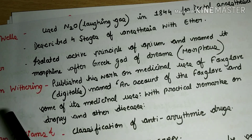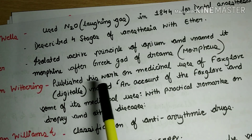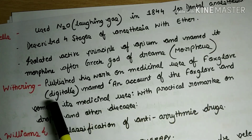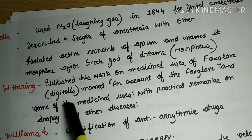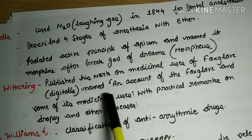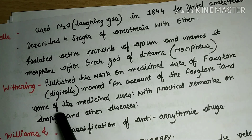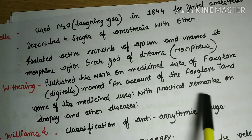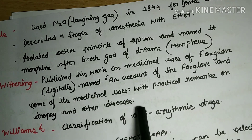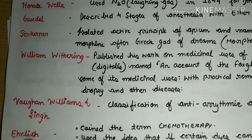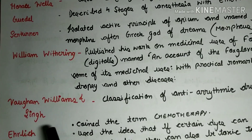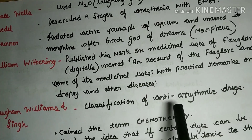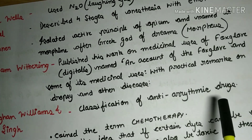William Withering published his work on the medicinal uses of foxglove and Digitalis, titled 'An Account of the Foxglove and Some of Its Medicinal Uses, with Practical Remarks on Dropsy and Other Diseases.' Vaughan Williams and Singh gave the classification of anti-arrhythmic drugs.